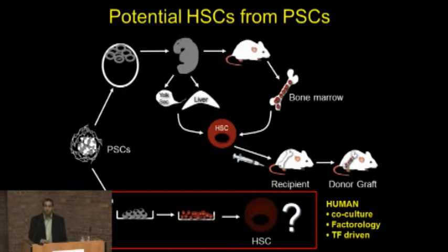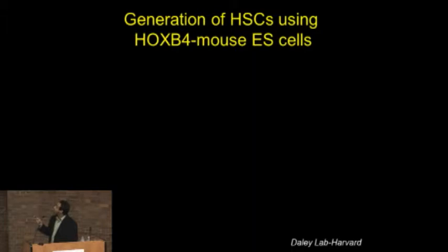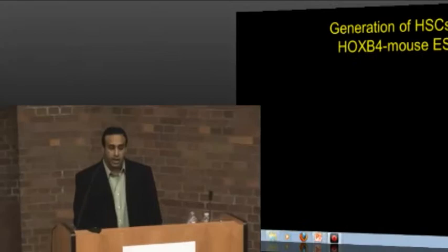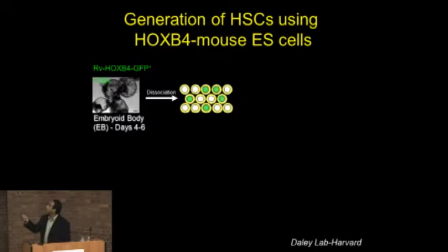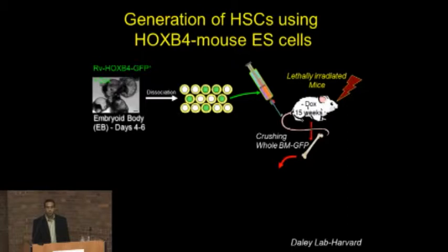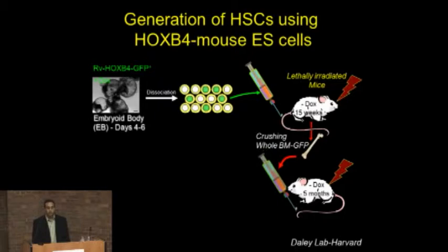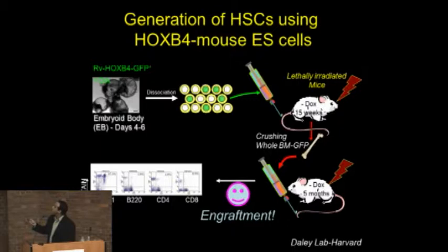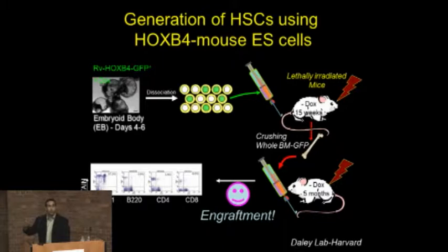The best demonstration is work by my colleague George Daly at Harvard, who did an incredible experiment with Hoxb4, a homeobox gene conserved in the human and mouse. They induced Hoxb4 in embryoid bodies using a GFP reporter, dissociated the cells, and transplanted them into lethally irradiated animals. They could reconstitute the animal with donor cells and then serially transplant into secondary animals, demonstrating that pluripotent cells have the capacity to make hematopoietic stem cells in vitro — not going through in vivo or in utero development. This was very encouraging.